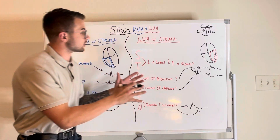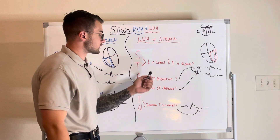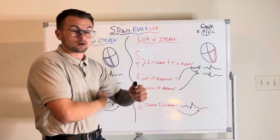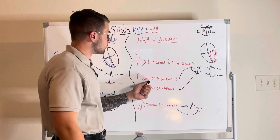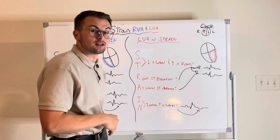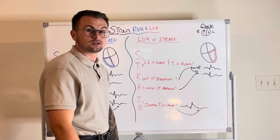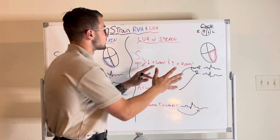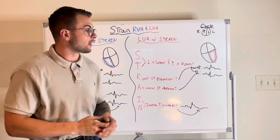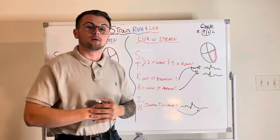Moving on to left ventricular hypertrophy with strain: are ST segments elevated in the rights and depressed in the left lateral precordials? Are the right STs elevated? Are all lateral STs depressed? And do we have inverted T waves in our lateral leads V5 and V6? If yes to all, then we can say this patient is likely experiencing left ventricular hypertrophy with strain. Thank you for taking the time to learn with us today — please like and subscribe for more content.